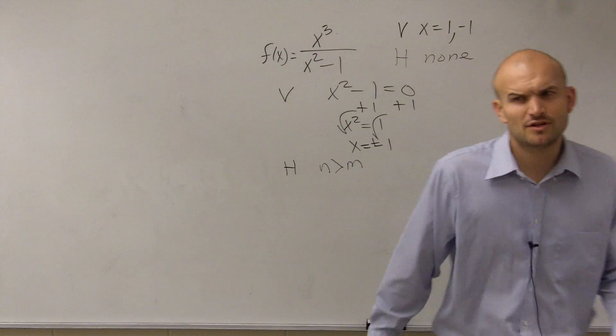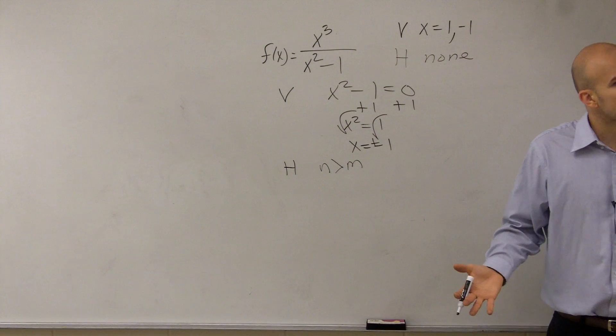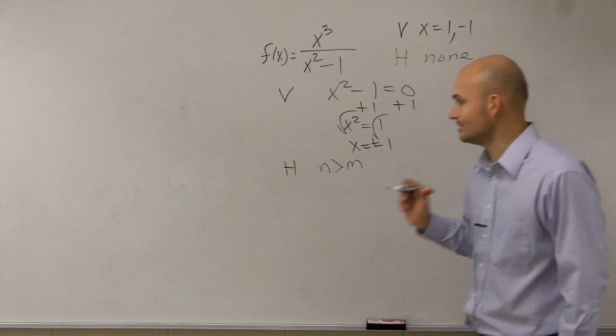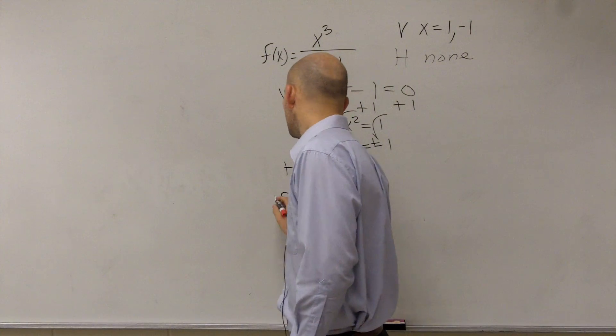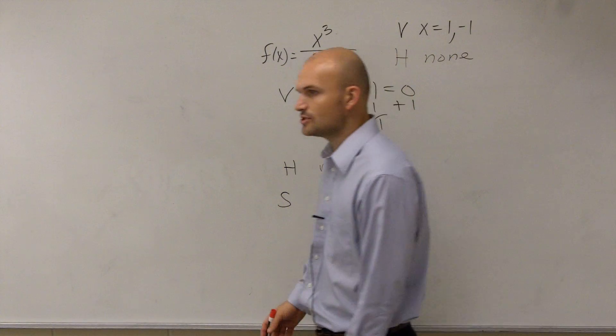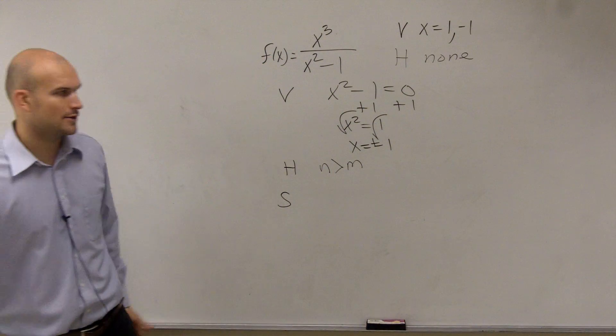So if we have no horizontal asymptotes, then is that it? Is there any other asymptotes we can have? And actually, there's one other asymptote that we can look at, which we call a slant, or an oblique asymptote. So is there a test for this, or what do we got to do?